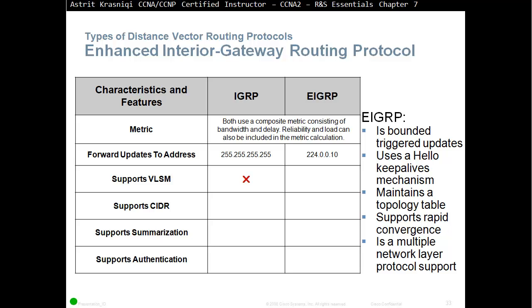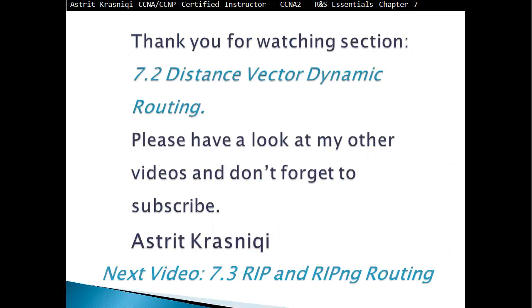VLSM is not supported on IGRP but is supported on EIGRP. Classless interdomain routing and summarization are also supported on EIGRP, as is authentication. Thank you very much for watching this section, 7.2, Distance Vector Dynamic Routing. Please have a look at my other videos and don't forget to subscribe. This has been Astrid Krasnici, and the next video is 7.3, RIP and RIPng routing, where we're going to configure the routing.